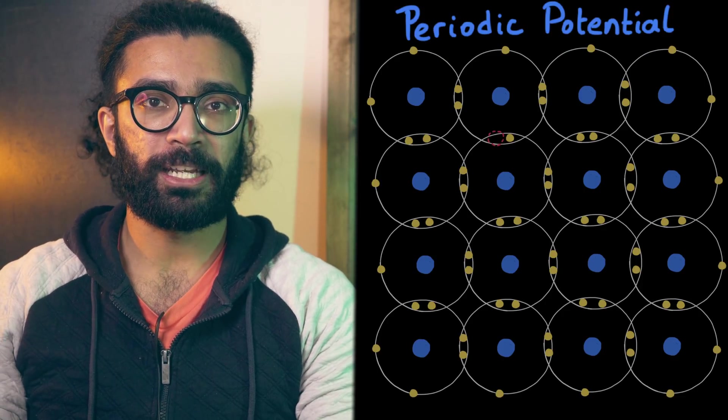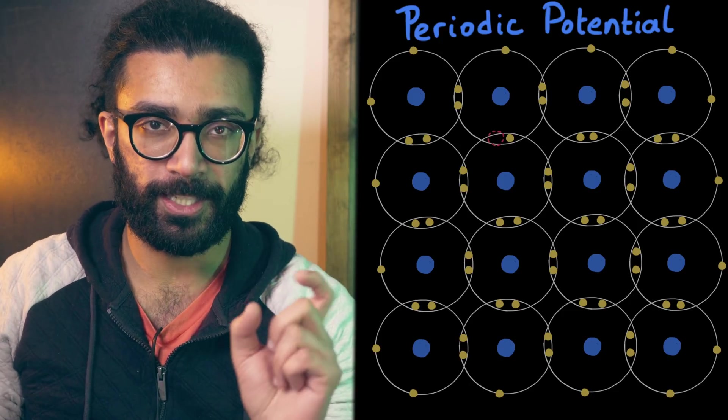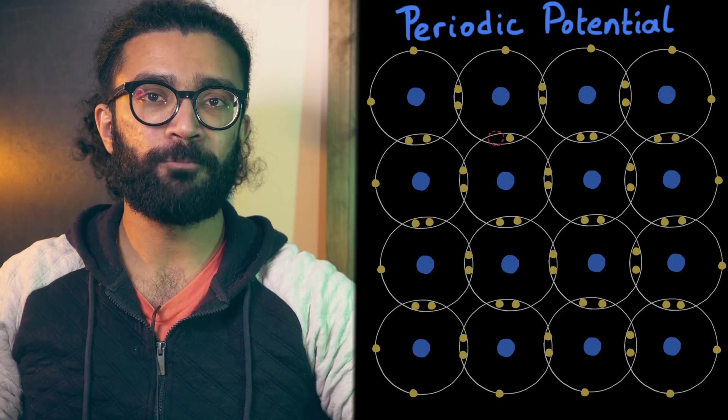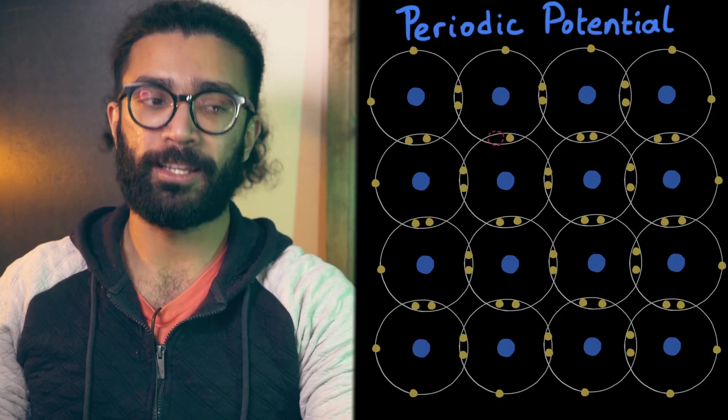This is because the arrangement is regularly repeating, with positive charges spaced equal distances apart, which is why it's periodic. And the positive charges, of course, have their own electric potential. Hence, we have a periodic potential.